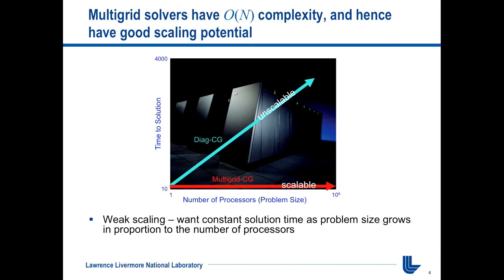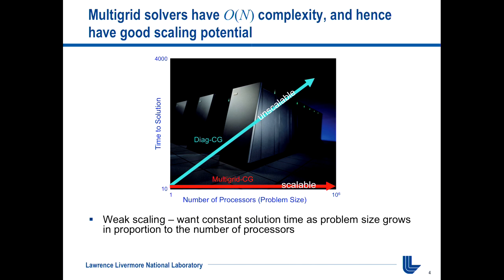So why multi-grid? The reason is because these are O(N) methods, if they work the way they're supposed to. If you have N unknowns, they take O(N) work to solve, which means they have good potential to scale up to large sizes and lots of processors. This weak scaling plot shows how throwing additional processors at a problem can still take more time, whereas with a multi-grid method you have the opportunity of taking constant time and utilizing those extra resources very well.